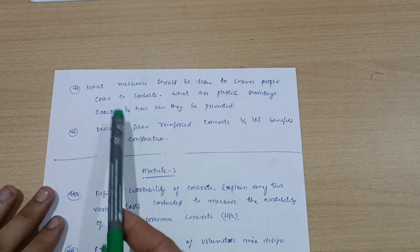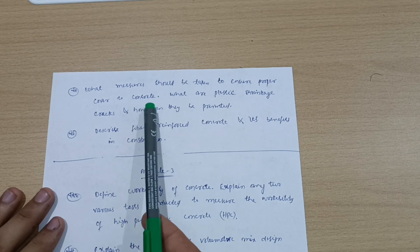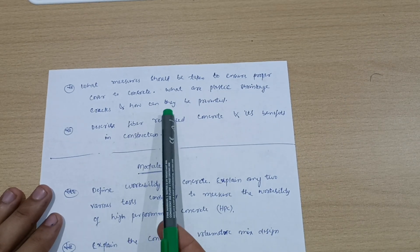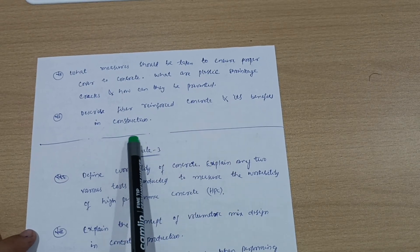Last two questions from Model 5. What measures should be taken to ensure proper cover to concrete? What are plastic shrinkage cracks and how can they be described? How does reinforced concrete and its benefits in construction work?